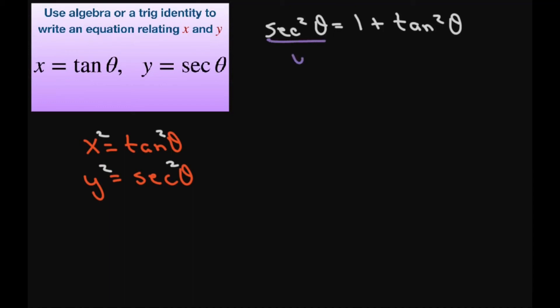Secant squared of theta is Y squared. Tangent squared of theta is X squared. So this is our relation between our X and our Y.